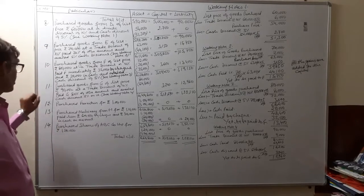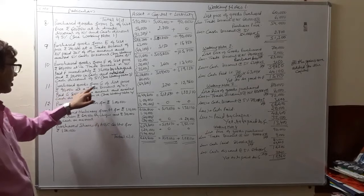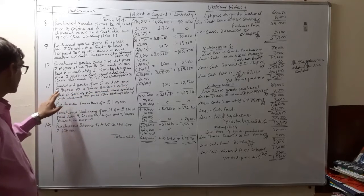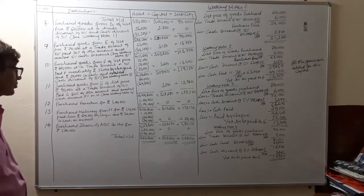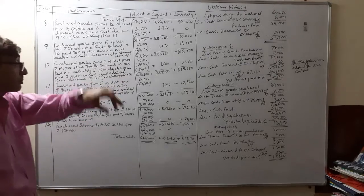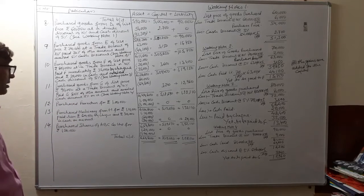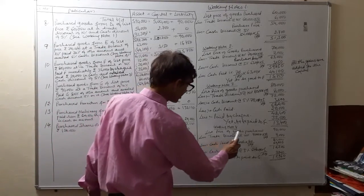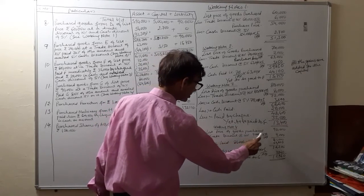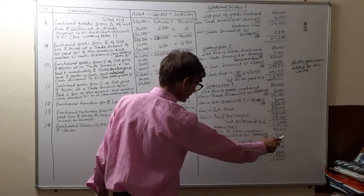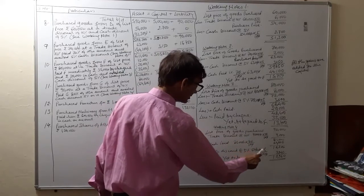Transaction 11: Purchase goods from G of list price rupees 90,000 at a trade discount of 10 percent. Paid G 80 percent of the amount and availed cash discount of 5 percent on the amount paid. Working note 4: list price 90,000 less trade discount at 10 percent — 90,000 into 10 by 100 — equals 9,000.